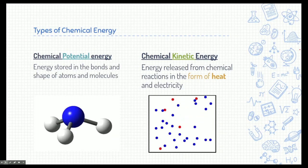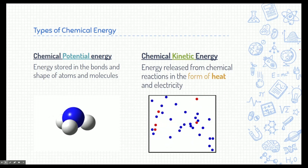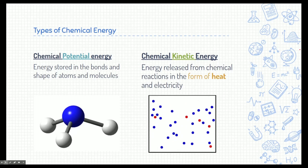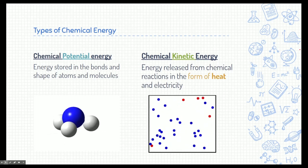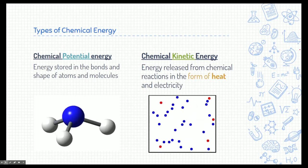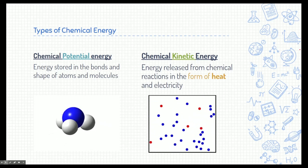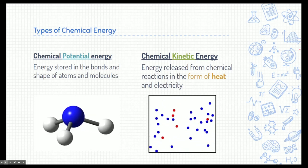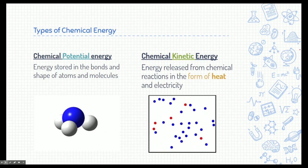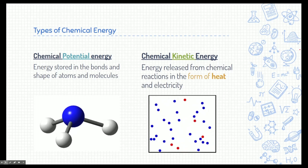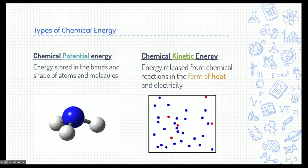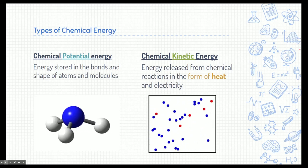There are two types of energy we should be familiar with: potential energy and kinetic energy. We're going to apply these specifically to chemical potential energy and chemical kinetic energy. The word potential means stored, so chemical potential energy is energy stored in a substance — typically in its bonds and how the atoms are interacting. Chemical kinetic energy, on the other hand, is energy released from these substances, typically in the form of heat and electricity.